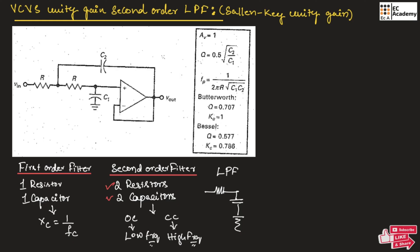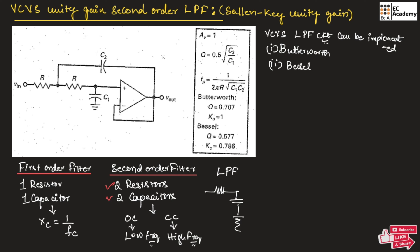This VCVS low-pass filter circuit can be designed or implemented by using three approximations: the first one is Butterworth approximation or Butterworth filter, the second one is Bessel approximation or Bessel filter, and the third one is Chebyshev approximation or Chebyshev filter.